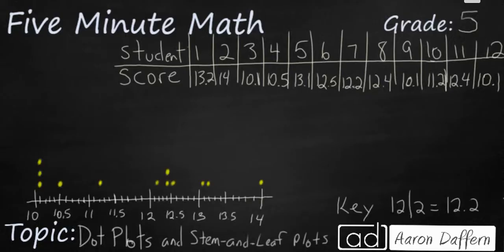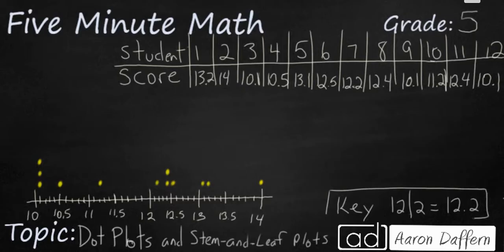So your dot plot is going to look something like this — a pretty broad range running from 10.1 to 14, and you can see that of all of them, 10.1 had the most students score, with three students scoring at 10.1. With our stem and leaf plot, remember that the key is the most important part. Our key is going to show that 12 in the stem and 2 in the leaf equals 12.2. It is okay to have two digits in the stem.